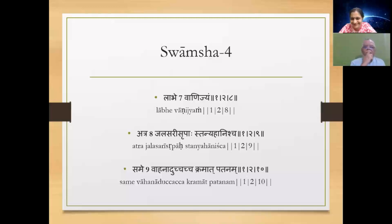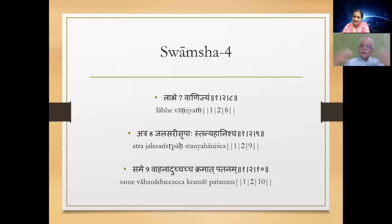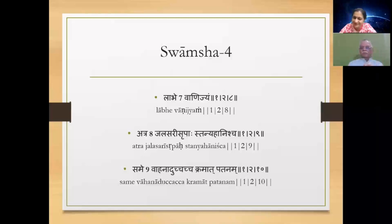Next Sutra: 'Labhe Vanejjam.' Labhe is 7, which means Tula — Libra. The sign itself is a weighing scale and the connection with Vanejjam — trade — is obvious. If it is a malefic aspecting, he may lose through trade; if it is benefic, he might gain through trade. We are looking at the Chara Atma Karaka, a planet which has travelled most degrees in a sign, so his influence is more — on the way of thinking of a person, how a person thinks.